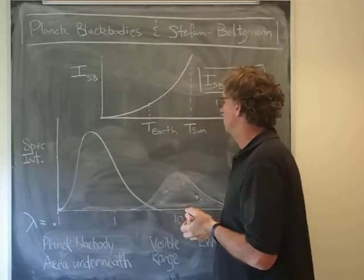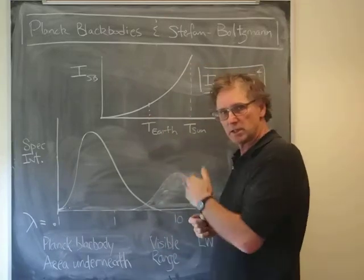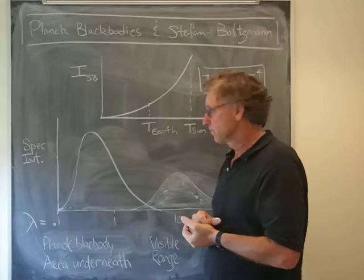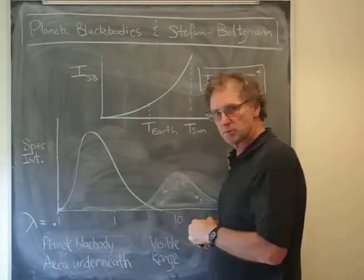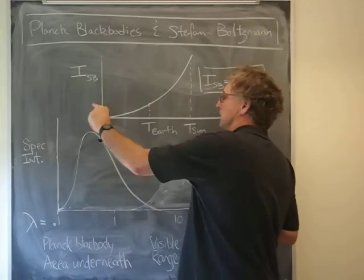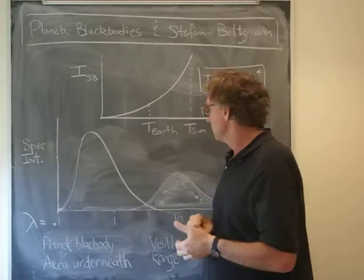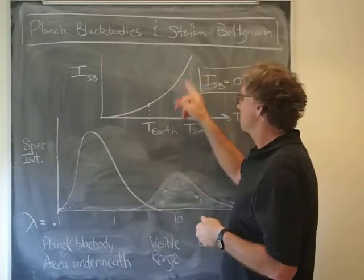As you probably know from experience, the hotter something is, the more it glows. I've drawn two points on this graph: one at the temperature of the Earth, which glows with a certain intensity, and another at the temperature of the Sun.